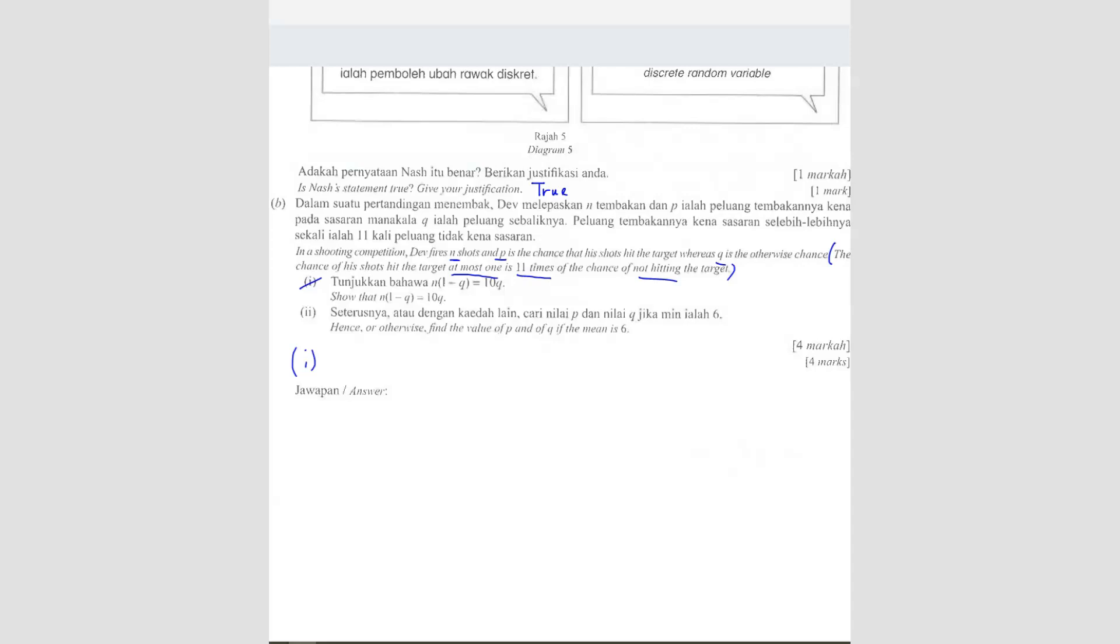So what they're trying to say... They're trying to say: The chance of his shot hit the target at most one. At most one. That means the probability of him hitting the target at most one. That means P(X ≤ 1).